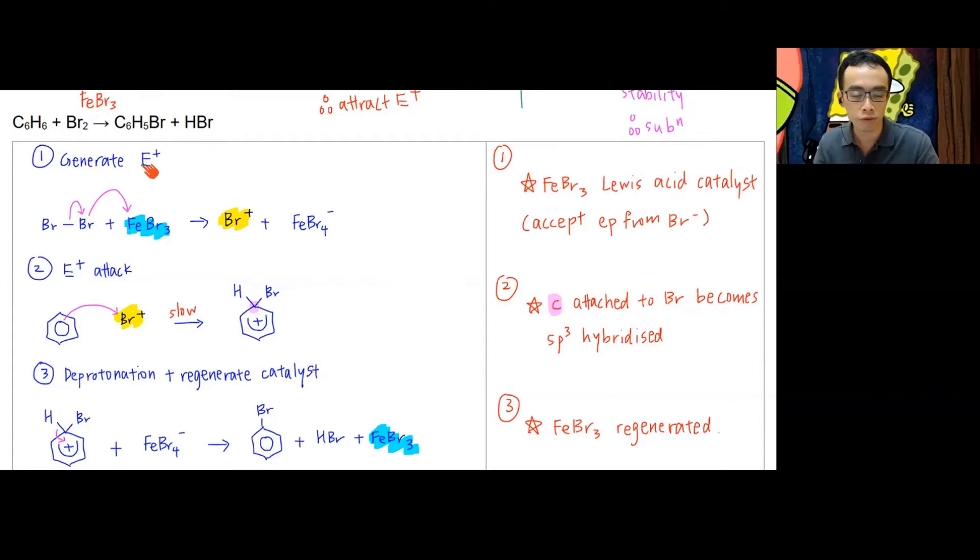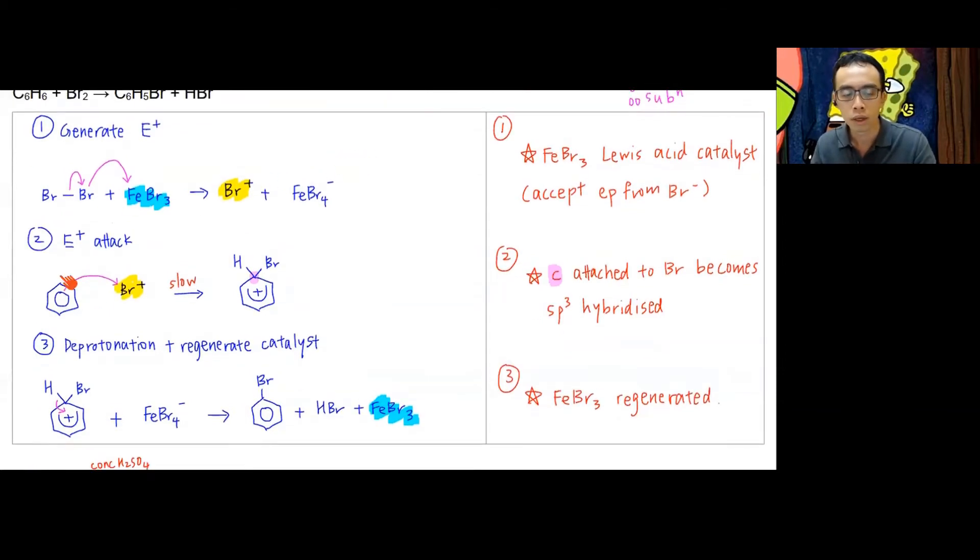The first step is to generate the electrophile. Basically, the bromine-bromine bond will break—this is heterolytic breaking of the bond. Both electrons go to Br, so basically this Br will be Br+. It will come here. This Br- will join to FeBr3 to form FeBr4-. I'm generating the electrophile.